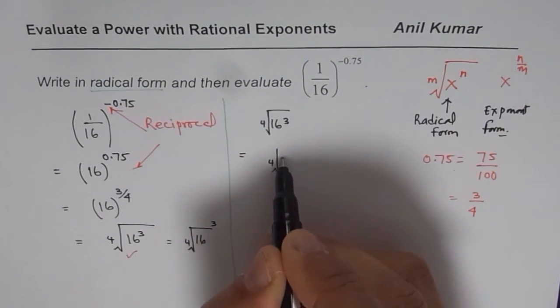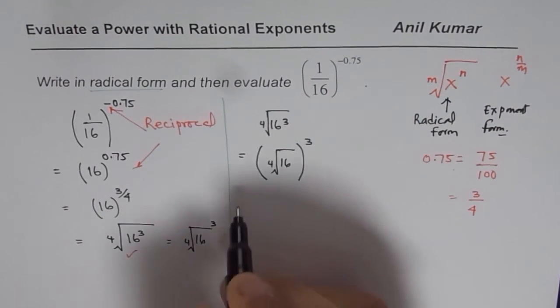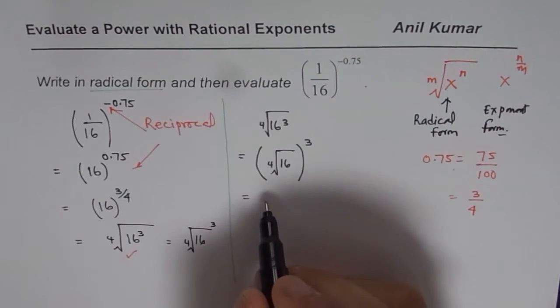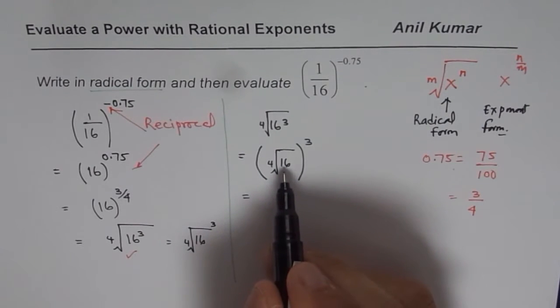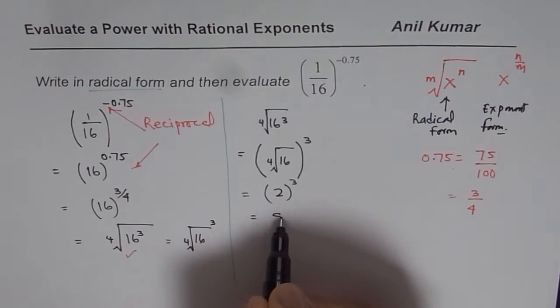I will do 4th root of 16 and then whatever answer I get, I will cube that answer. So, 4th root of 16 is square root is 4, square root of 4 is 2, so we get 2, so 2 cube, 2 cube is 8.